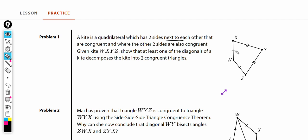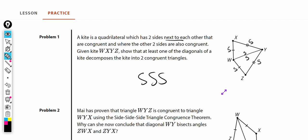We're given kite WXYZ, and we're showing that at least one of the diagonals decomposes the kite into two congruent triangles. I'm going to choose this diagonal right here. If I cut it in half, I can see I have this triangle and that triangle. We need to show that they are congruent. That side is congruent to that side, this side is congruent to that side, and we have the shared side in the middle, which gives us SSS — three sides congruent make congruent triangles — and we're done.